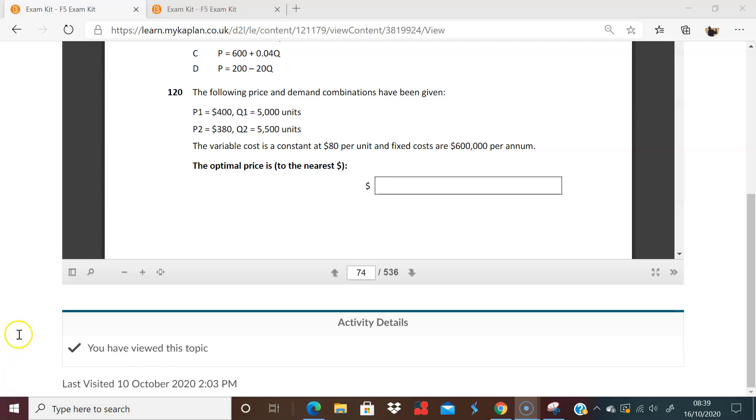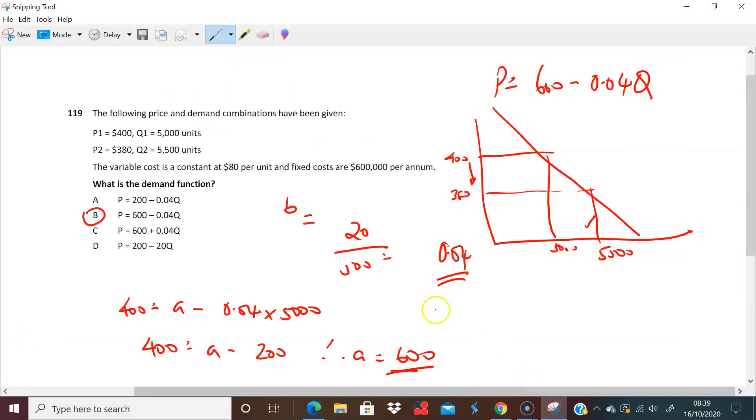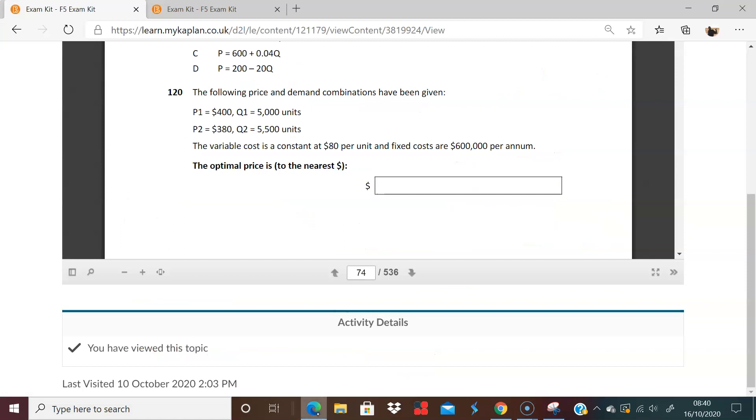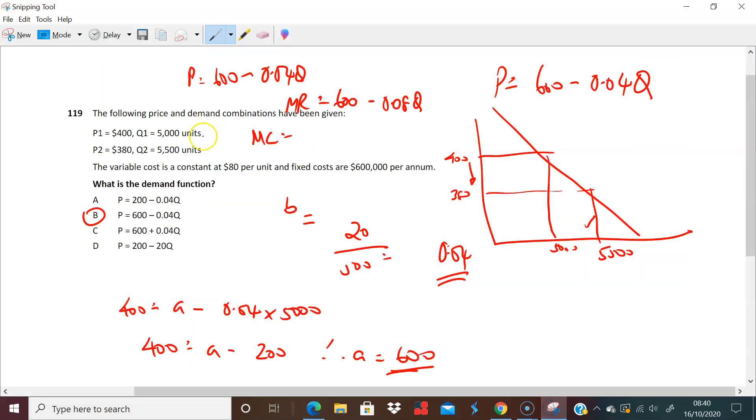Great. So this carries on again. 120 carries on literally from 119. So now they're telling, we've worked out all our information on the previous slide, so we knew the answer was B, 600, P equals 600 minus 0.04Q, and we therefore know that MR equals 600 minus 0.08Q. And we know that at the optimal point, marginal cost equals this. And they're telling us in the question, if we look at it, it tells us the variable cost is 80. So that means that 80 equals 600 minus 0.08Q. This is where I'm going to find the optimal quantity.